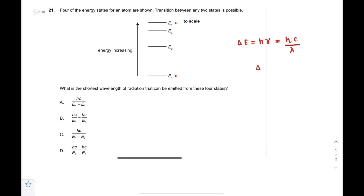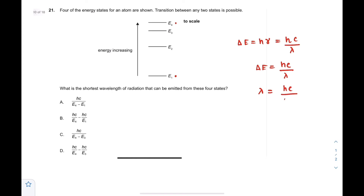From this, we can write that ΔE = hc/λ. Therefore, λ — the wavelength emitted during a transition from one energy state to another — is equal to hc/ΔE.